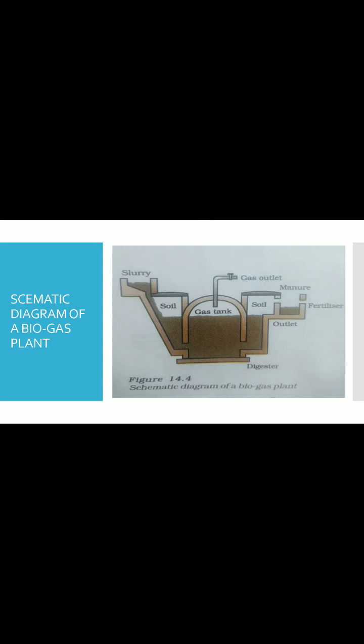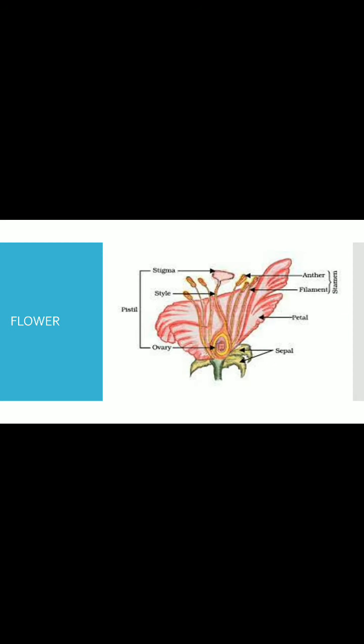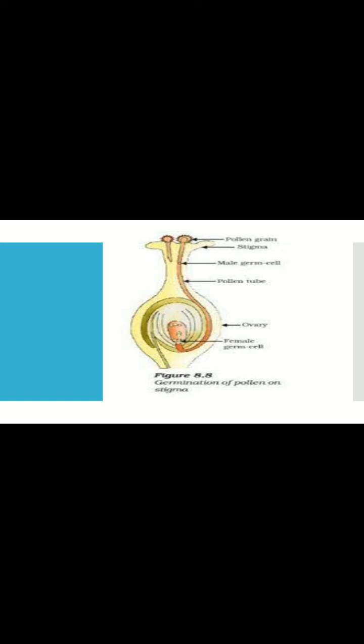Lastly, we have the schematic diagram of biogas plant and typical structure of flower - that is hibiscus flower. You have to practice the flower as well as their labeling. And one more, that is germination of pollen on the stigma. So this is also a very important diagram you need to practice.